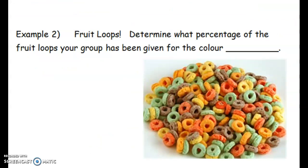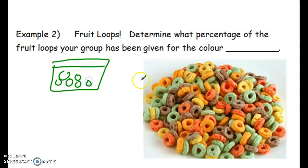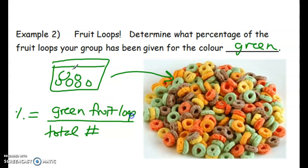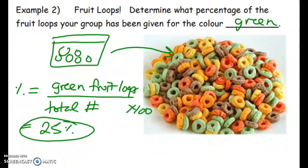Normally what I would do is give students a baggie of Froot Loops with a whole bunch of different colored loops inside. I assign the groups a color — let's say green — and we want to know the percent of green Froot Loops. Whatever you want to know the percent of, you have to count all the total number of Froot Loops in the bag. Your numerator is the color you want, say green Froot Loops, over the total, times 100. So if there were 100 Froot Loops and 25 were green, that's 25% green. Those two examples — the dance and the Froot Loops — are percentages by numbers.